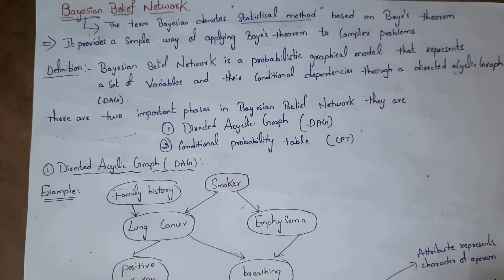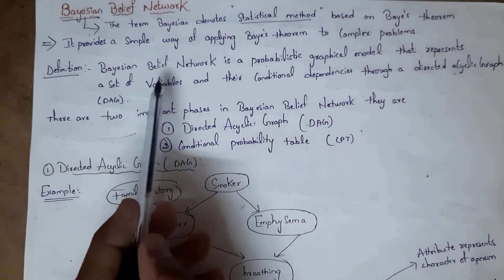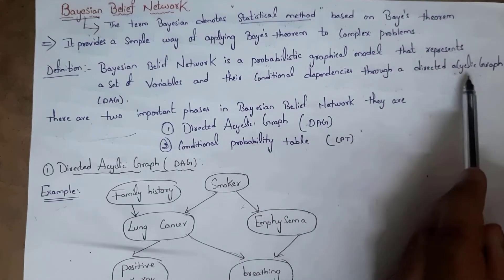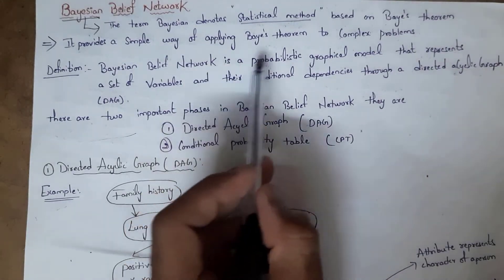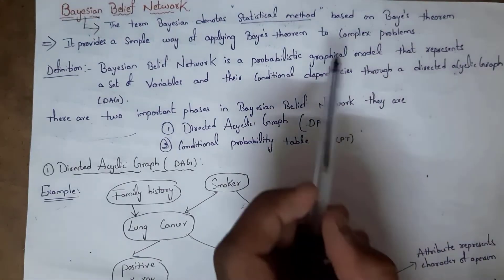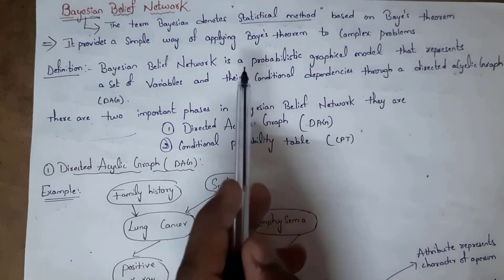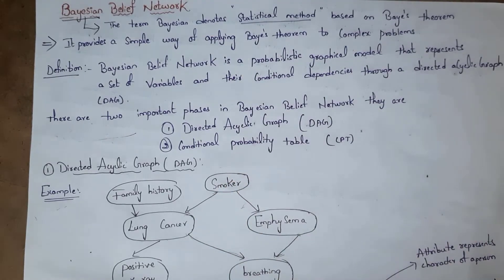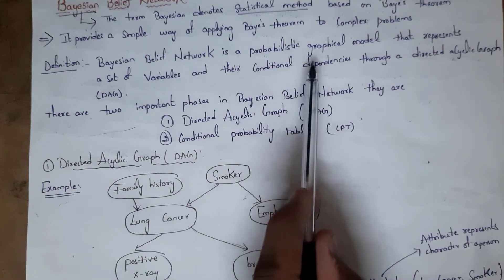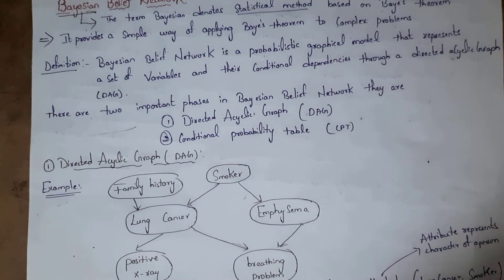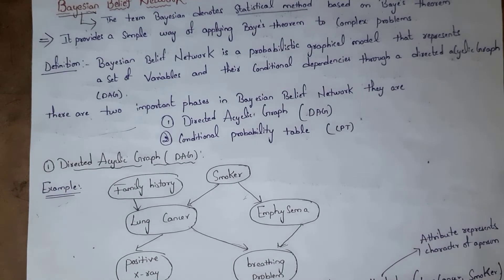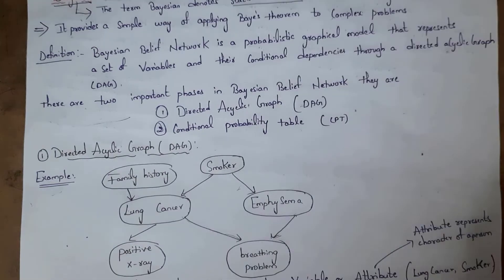The definition of a Bayesian Belief Network: it is a probabilistic graphical model that represents a set of variables and their conditional dependencies through a Directed Acyclic Graph. It uses a graph to find probability, and by using the DAG it shows relationships between variables — how one variable depends on another variable based on conditions.